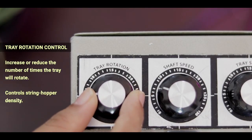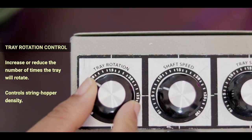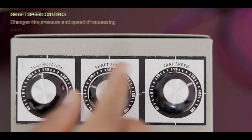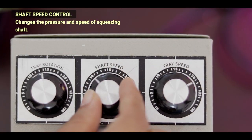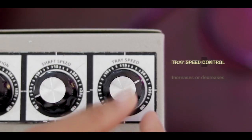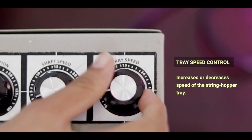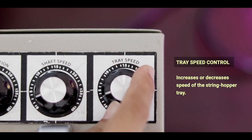Tray rotation knob sets the pressing time and the thickness of the string hopper. Shaft speed knob controls how fast the string hopper mixture is pressed. And tray speed knob changes the turning speed of the string hopper tray.